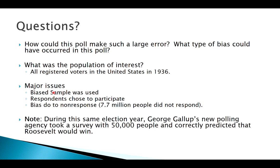That same year, George Gallup started implementing ideas of simple random sampling and predicted almost exactly that Roosevelt would win really big — with a very small sample size of just 50,000.